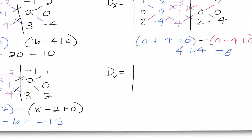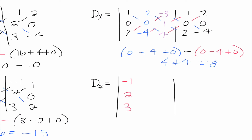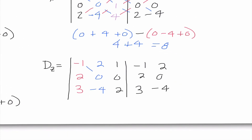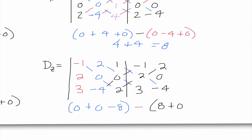Last but not least, D sub z. My first column is x coefficients: negative 1, 2, 3. Second column is y coefficients: 2, 0, negative 4. This time I'm replacing the last column — the z column — with the constants: 1, 0, 2. Rewriting first two columns, starting top left: negative 1 times 0 times 2 is 0. 2 times 0 times 3 is 0. 1 times 2 times negative 4 is negative 8. Mr. Determifish says subtract, baby. Going backwards: 2 times 2 times 2 is 8. Negative 1 times 0 times 4 is 0. 1 times 0 times 3 is 0. So I have negative 8 minus 8, which is negative 16.